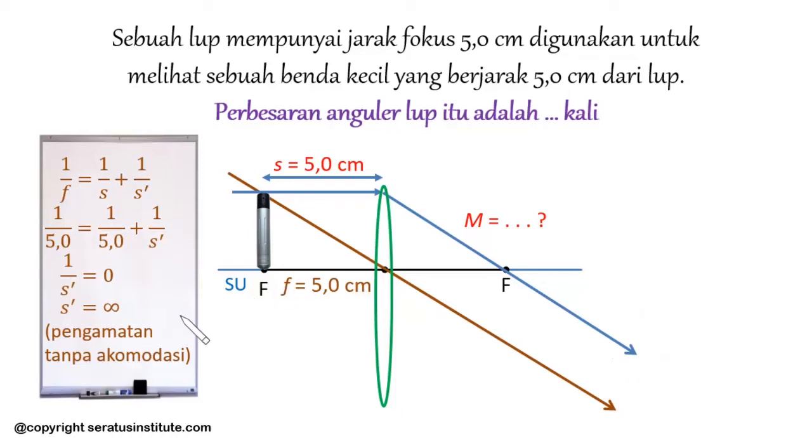Next, if Sobat 100 already knows that the observation occurs without maximum accommodation, how do you determine the angular magnification of the magnifying glass? In this problem, without any specification, the observation is done by a normal eye. A normal eye has a near point of 25 cm. Sobat 100 still remember, for observation without accommodation to determine the angular magnification of a magnifying glass, how do we do it?